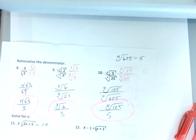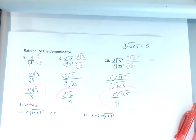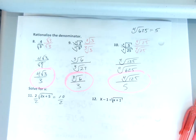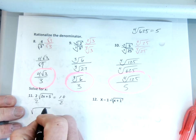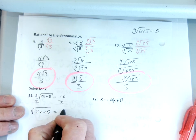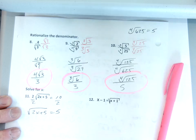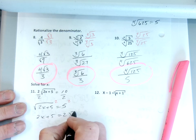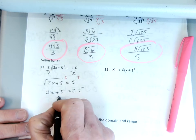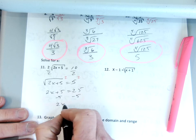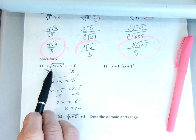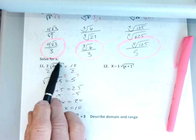Number eleven, we're going to solve. First I'm going to divide by 2. I'll have a square root of 2x plus 5 equals 5. I'll square both sides: I'll have 2x plus 5 equals 25. Just solve — minus 5, minus 5 — 2x equals 20. Divide by 2, x equals 10. That's an okay answer because we're not going to make any negative square roots.